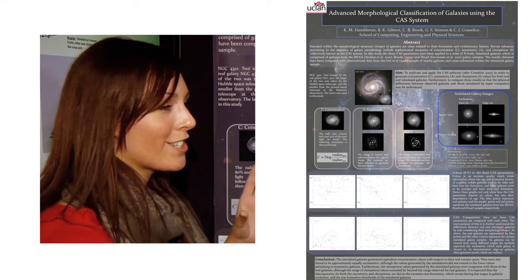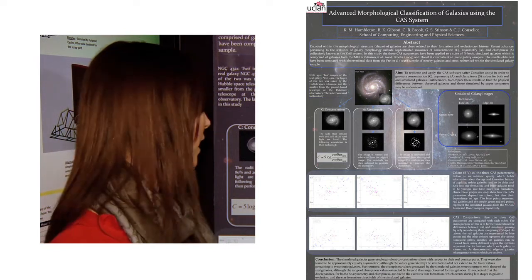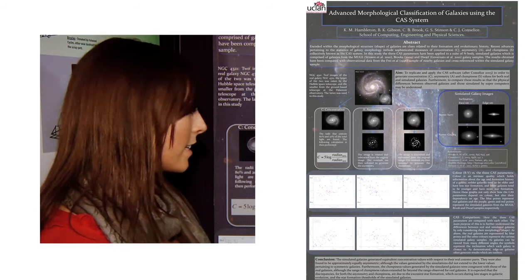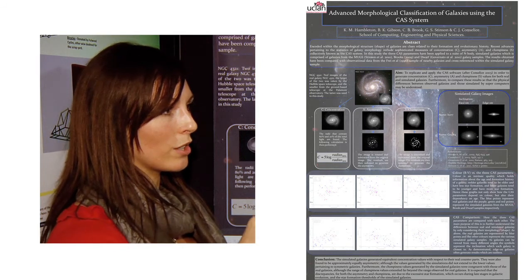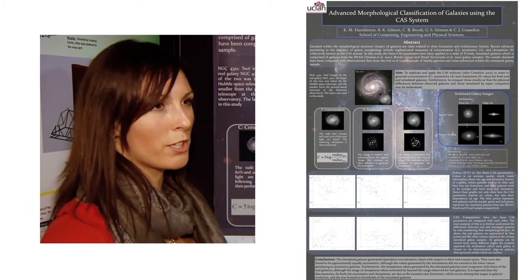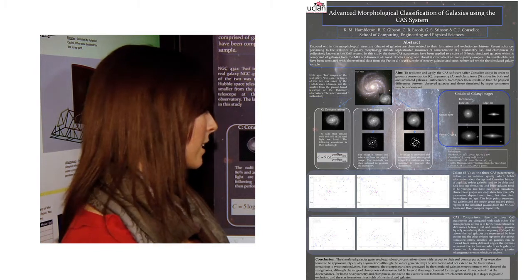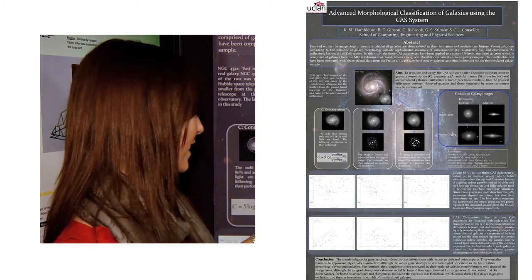So the concentration told us how concentrated the galaxy was, it pretty much says what it is. The asymmetry not only tells us how the galaxy looks from different angles but it tells us about how much star formation is going on within the galaxy and also within the dust lanes of the galaxy as you can see here.